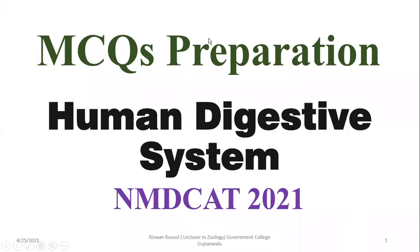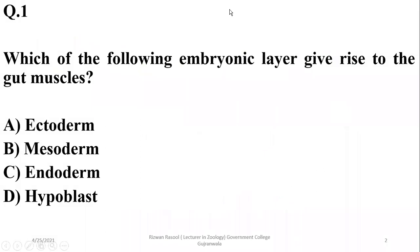Bismillahirrahmanirrahim. In this lecture we're going to have a discussion about some important MCQs of the human digestive system. Question number one: which of the following embryonic layers gives rise to the gut muscles? It is basically mesoderm.